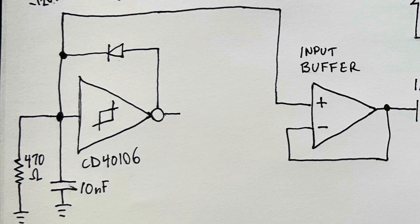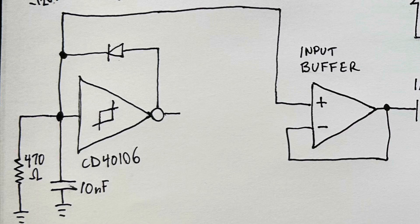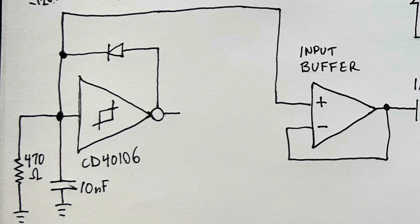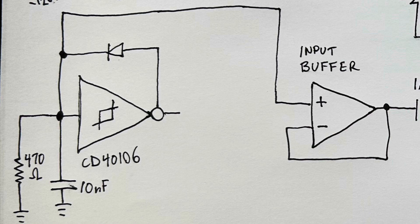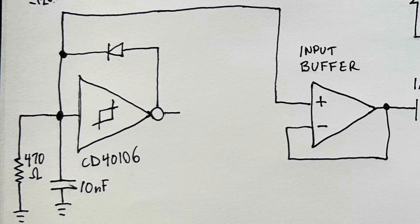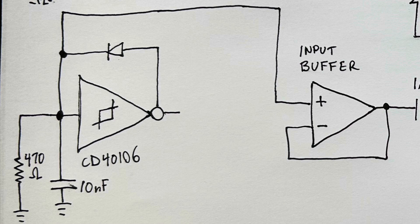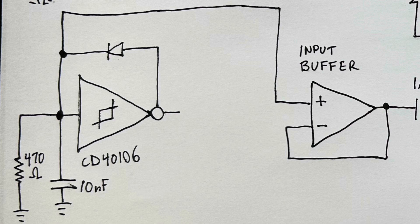On the first part of this circuit I use a CD40106 hex inverting Schmitt trigger oscillator. I use just one of the oscillators in order to generate a sawtooth wave centered around 6 volts.